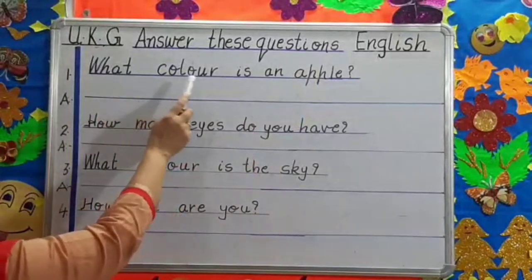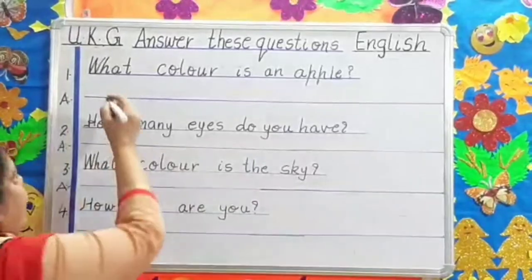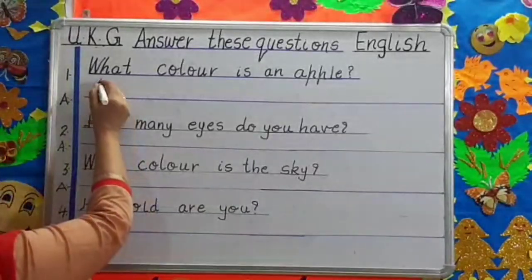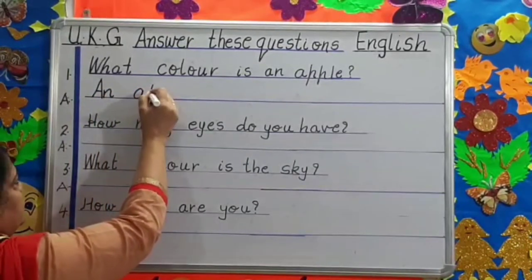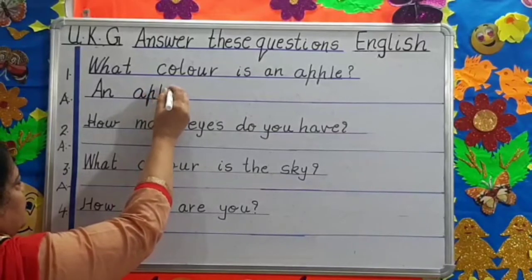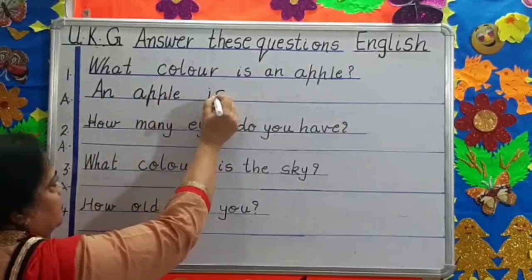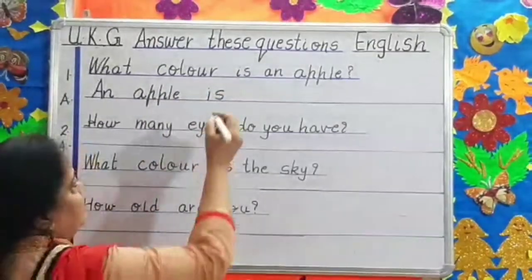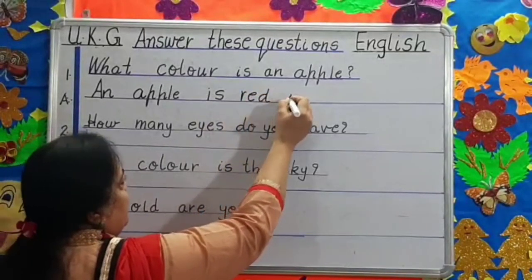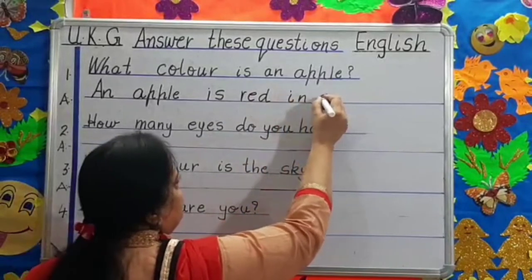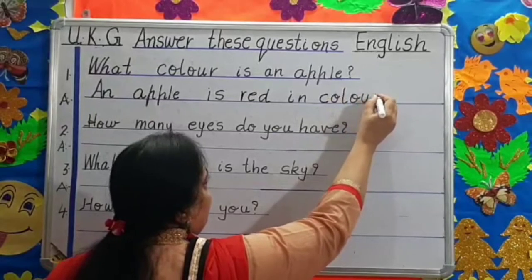What color is an apple? Children, what is an apple? An apple is red in color. R-E-D, red in color. We will stop.